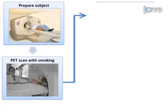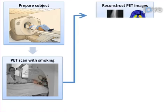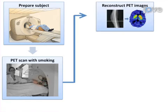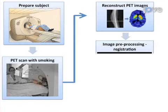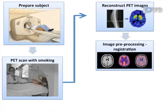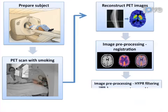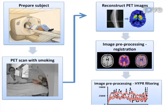The second step is to reconstruct the list mode data to images, taking motion into account, and then smooth the PET images with a hyperfilter.